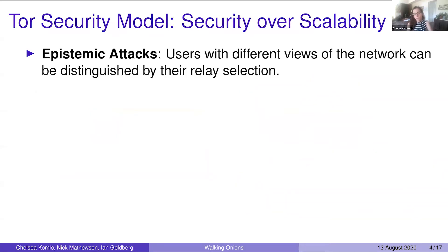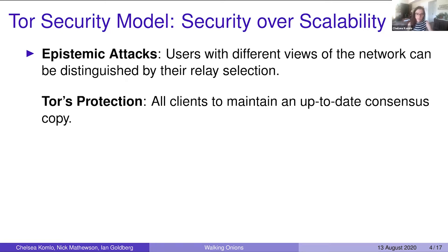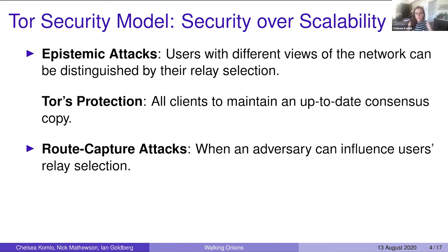In this model, TOR favors security over scalability. There are two attacks that are relevant to our work. The first is epistemic attacks — users with different views of the network can be distinguished by their relay selection. If some users were more likely to select certain relays over others, adversaries looking at the network would be able to distinguish these users. TOR protects against this because all clients maintain the same up-to-date consensus, so all clients are equally likely to select these relays.